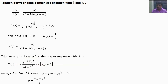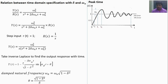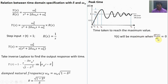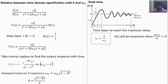For the calculation of peak time: peak time is defined as the time taken to reach the peak value, so y(t) will be maximum when dy/dt = 0. This is the condition for maxima or minima. We differentiate y(t) and set it equal to zero. We get the peak time: tp = π / ωd.